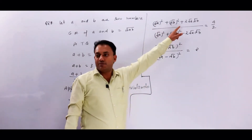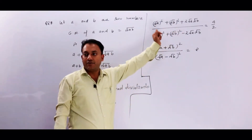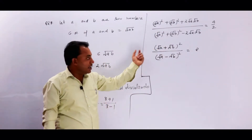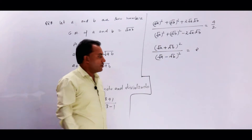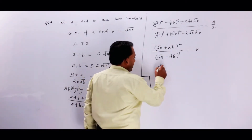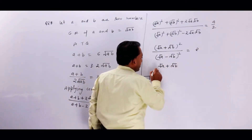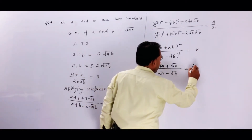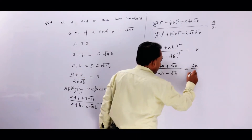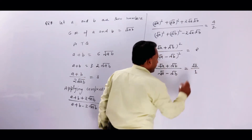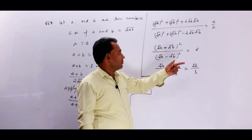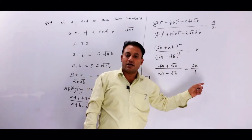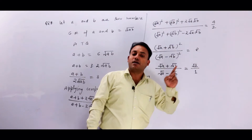ऊपर (√A + √B) का whole square बना, और नीचे (√A − √B) का whole square बन गया। अब square root ले लीजिए, तो: (√A + √B) upon (√A − √B) = √2. इसके upon में 1 ले सकते हैं — square root लेंगे तो perfect square जाएगा और √2 बचेगा। Upon में 1 ले लिया ताकि componendo-dividendo लगाने में दिक्कत न हो।